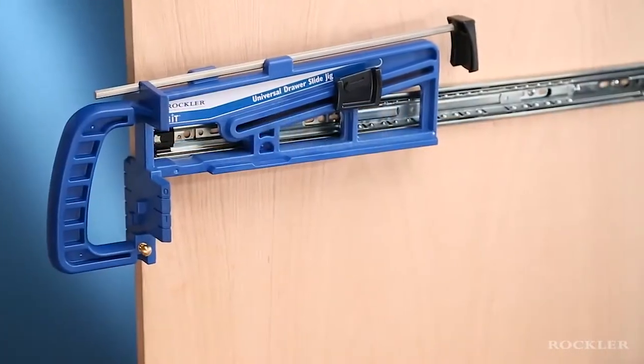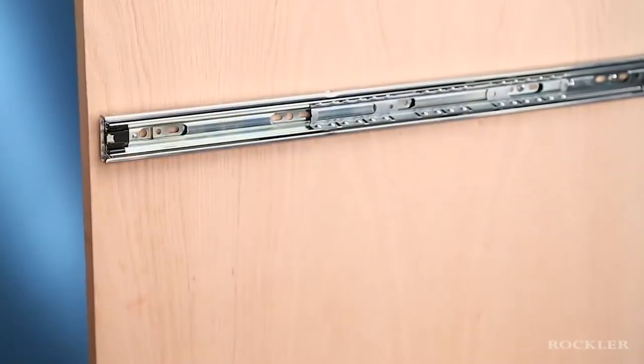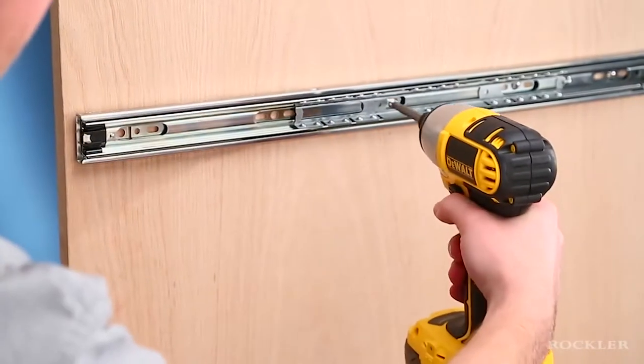After installing a couple of screws, you can release the locking wedge, remove the jig, and drive all the remaining mounting screws as directed in the slide instructions.